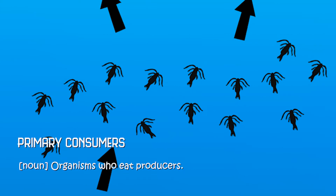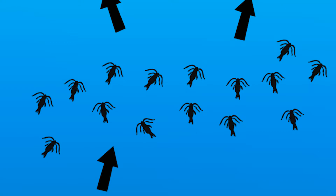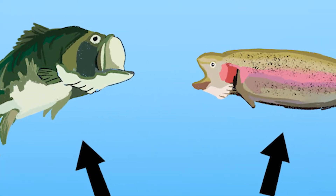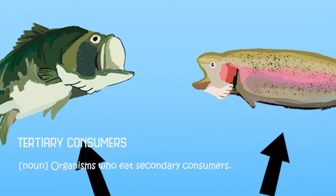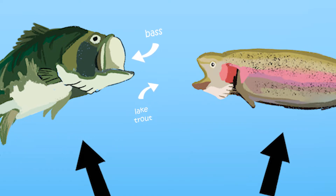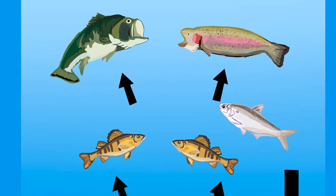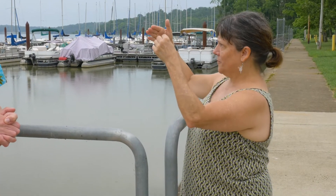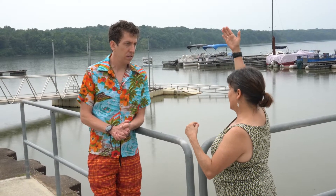In this lake, primary consumers are what is called zooplankton. There are many different species of zooplankton that consume the algae. Then that zooplankton is fish food — there are several fish that consume the zooplankton. And then at the top of the food level, you have the piscivores — those are fish that consume fish. So in Acton Lake's trophic food web, you have four trophic levels: primary producers, primary consumers, secondary and tertiary consumers.